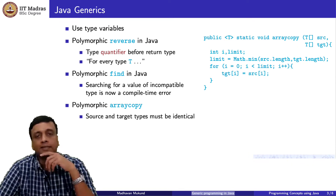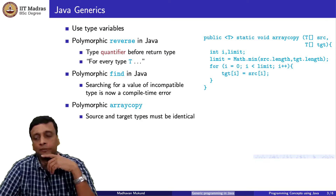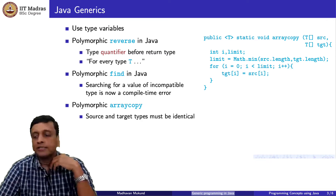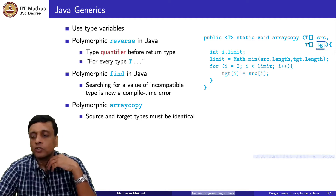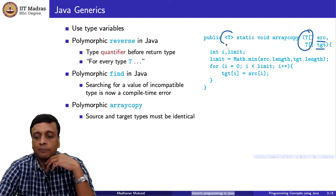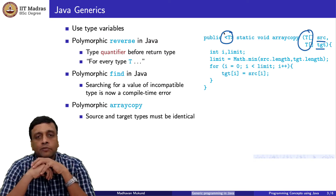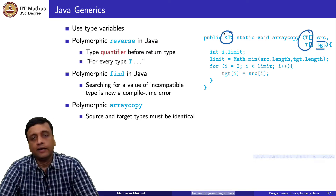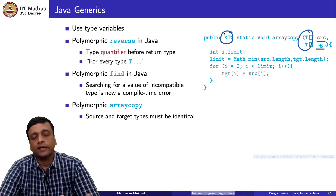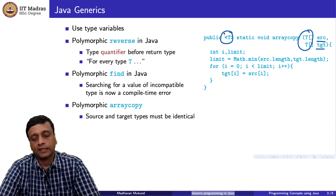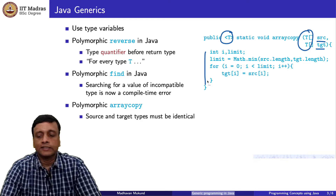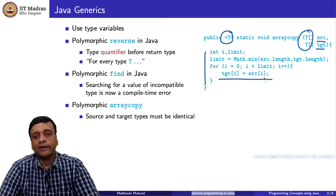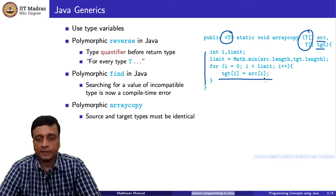For array copy, here is the strict version: if I want to copy from source to target, both must have the same type. So for any type T I can take an array of type T and copy it into another array of type T. The rest of the code does not change at all, and the assignment is always guaranteed to work because both target[i] and source[i] have exactly the same type.